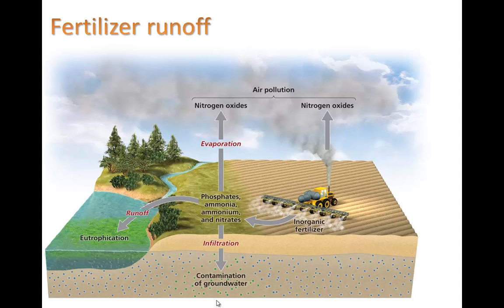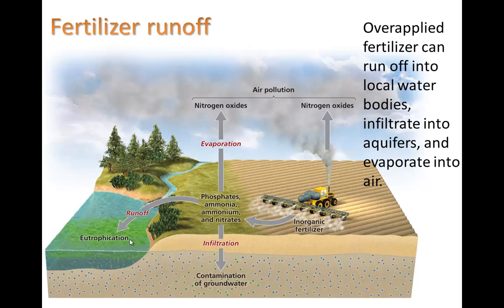Once you have contaminated groundwater, that can be very tricky to clear up, because the residence time for this water is pretty high. When you dig a well and tap into that water, often that water has been in there for decades — in some cases, centuries. Some of this fertilizer can also go into our waterways through runoff, and we saw that eutrophication extensively with the dead zones. Overapplied fertilizer can run off into local water bodies, infiltrate into aquifers, and evaporate into the air, and nitrates and phosphates can cause health problems.